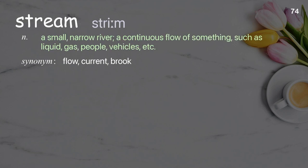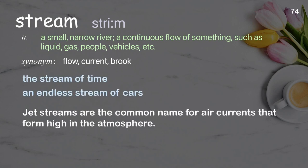Stream: A small, narrow river; a continuous flow of something, such as liquid, gas, people, vehicles, etc. Examples: the stream of time, an endless stream of cars. Jet streams are the common name for air currents that form high in the atmosphere.